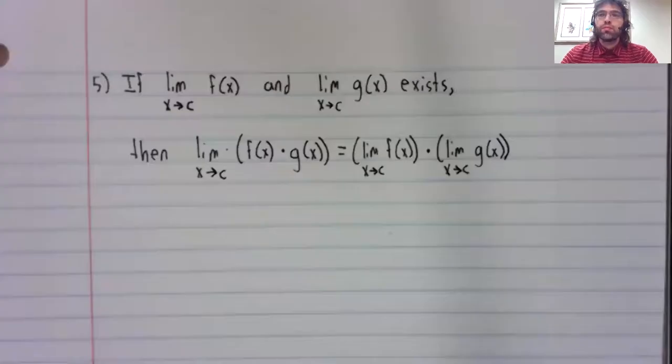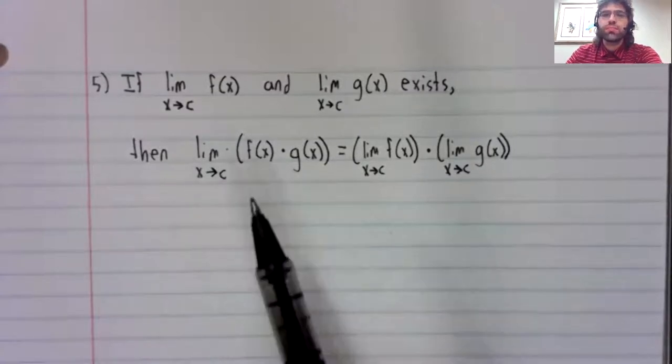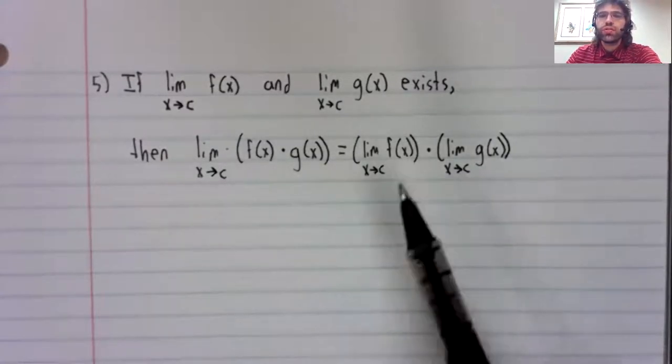Now let's look at the limits of products and the limits of quotients. Products work like sums and differences worked. The limit of a sum is the sum of the limits. The limit of a difference is the difference of the limits, and the limit of a product is the product of the limits.